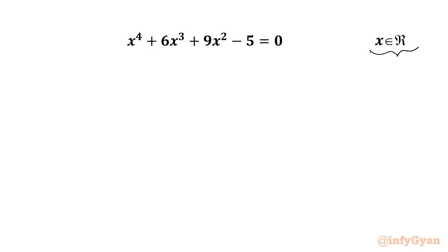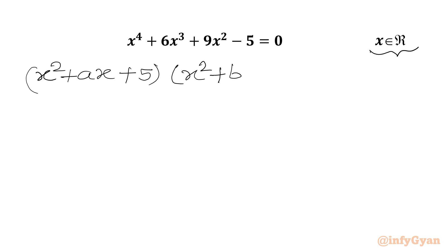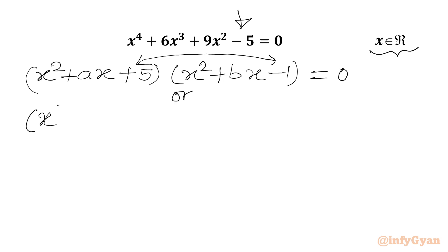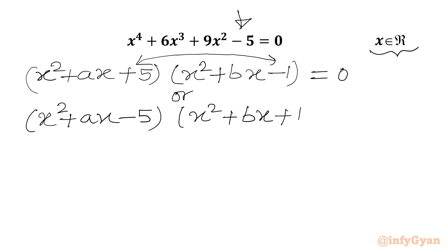I will write our quartic expression in terms of product of two quadratics. So I can write (x² + ax + 5)(x² + bx − 1) — here 5 times −1 is −5, equal to 0. Or we can consider a second case: (x² + ax − 5)(x² + bx + 1) equal to 0, where −5 times +1 still gives −5. So this is our first case and this is our second case. Let's solve one by one.